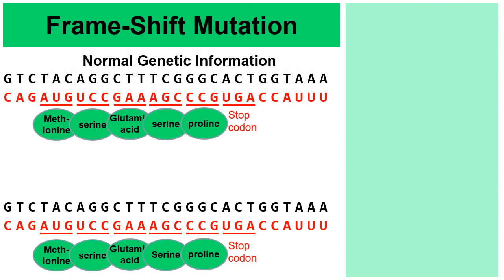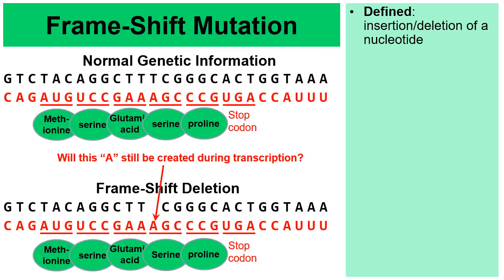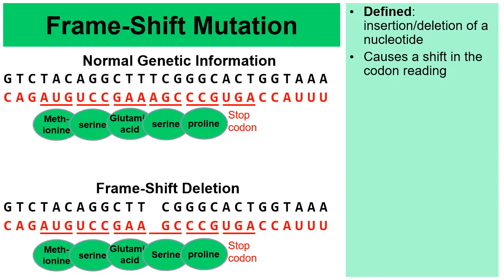Let's talk about another type of mutation: a frameshift mutation. This is where there's an insertion or deletion of a nucleotide where there shouldn't be. On the bottom, we have a frameshift deletion — the blinking T is deleted. When that happens, during transcription that A would not be created either. The reason this is called a frameshift is because it causes a shift in the codon reading — the ribosome reads three nucleotides at a time, not two.